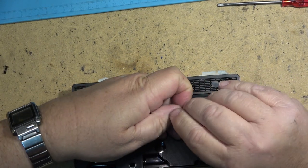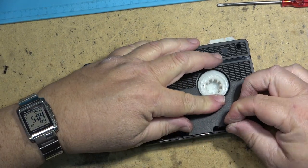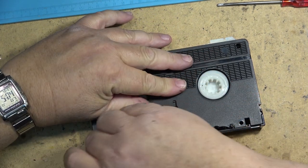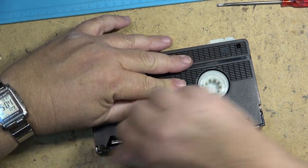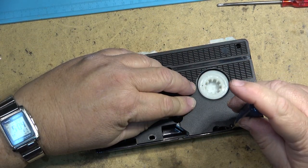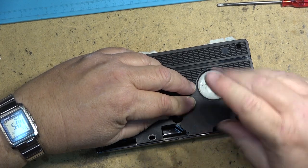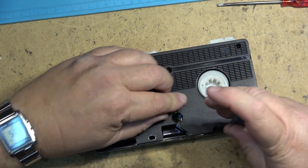Some cassettes like this one have longer screws that go in the front and shorter screws that go in the back, so be sure you check the screws for their length before you put them back in.